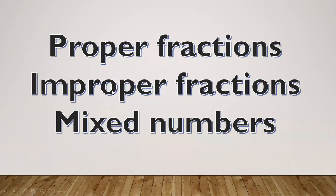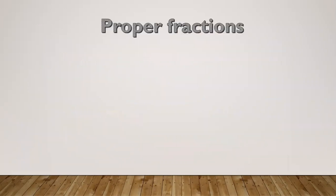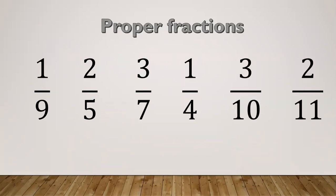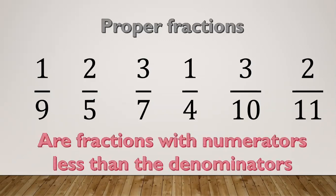Now we have different kinds of fractions: proper fractions, improper fractions, and mixed numbers. Proper fractions include examples like 1/9, 2/5, 3/7, 1/4, 3/10, and 2/11. These are fractions where the numerator is less than the denominator — the numerator is smaller than the denominator.